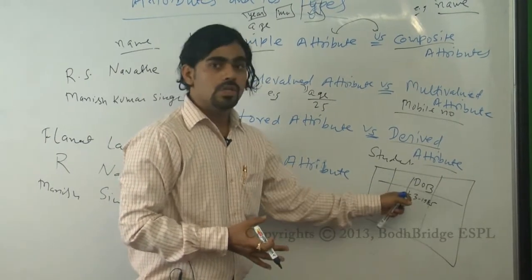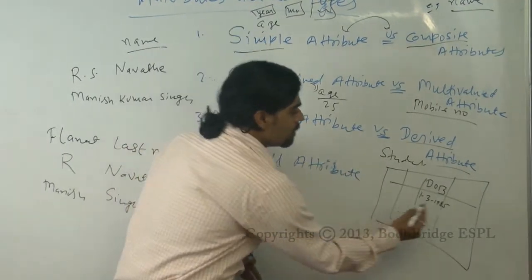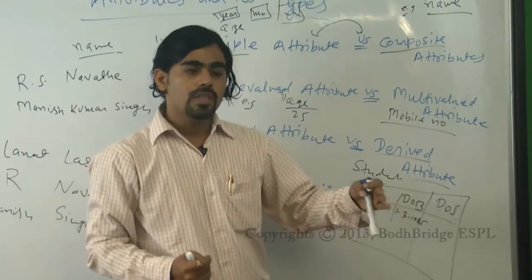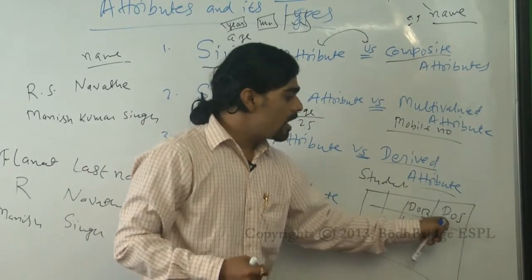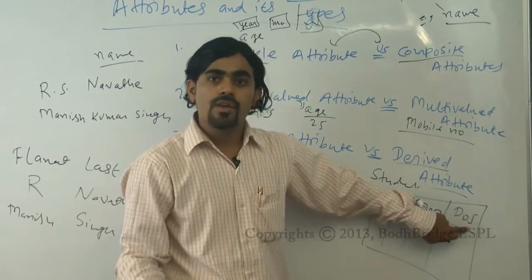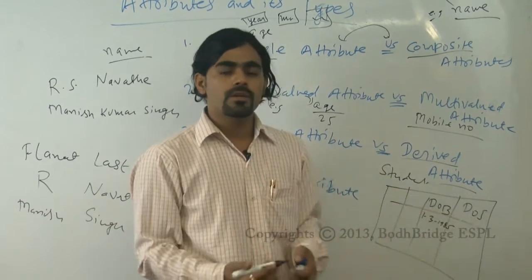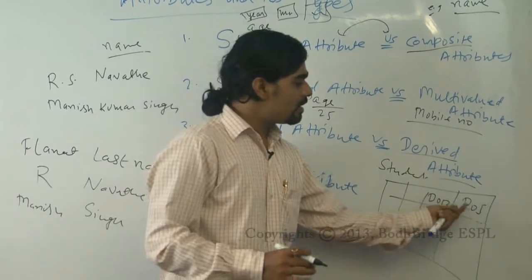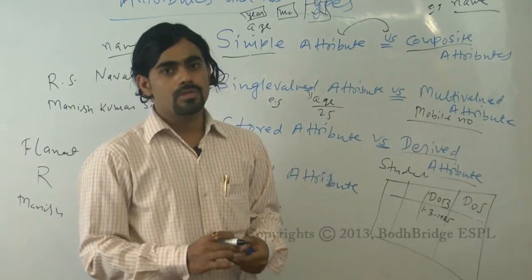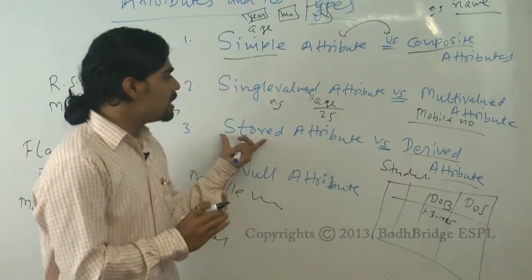Another example: in a company database, you store 'date of joining.' After five years, if HR wants to evaluate experience for appraisals or salary increments, they calculate experience from that stored date of joining. What is extracted through such calculations is a derived attribute, and it is not stored separately in the database.